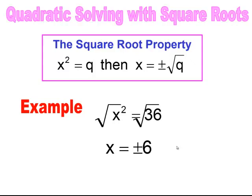It's very important to understand that when you square root, a solution will have two different answers — both the positive and negative value. Because if I were to substitute into x squared: when I square a positive 6, I get positive 36, and when I square a negative 6, I also get positive 36. So both values are an answer for this expression.